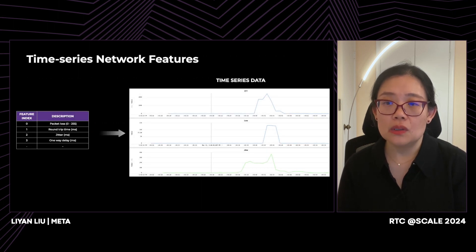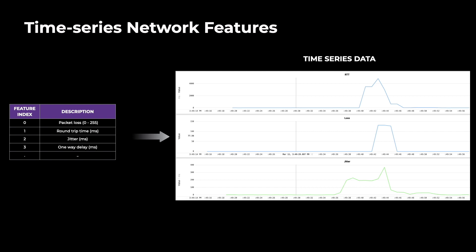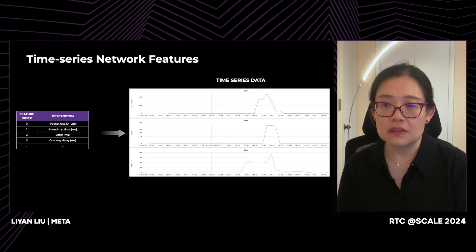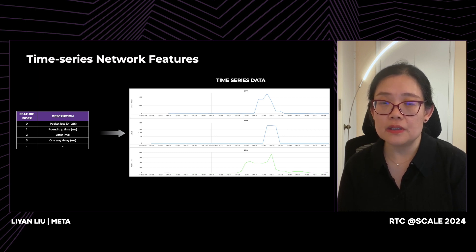We mainly use low-level features for BWE ML projects. These low-level features can be collected at 100ms, 500ms, or 1-second time intervals during production calls. The features include packet loss rate, round-trip time with different evaluation types, jitter, and congestion window pushback. These time-series are usually collected over the past 10 to 30 seconds. We can also use feature engineering to extract and aggregate more powerful features for the model.